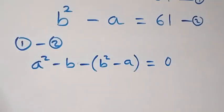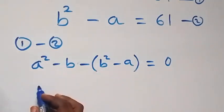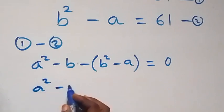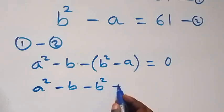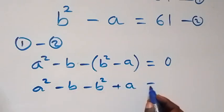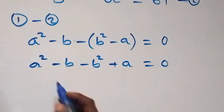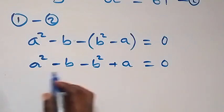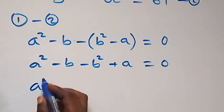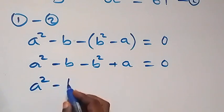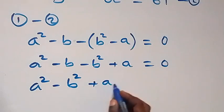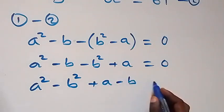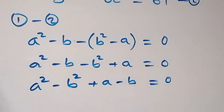Then, expanding the bracket gives us A squared minus B, then minus B squared plus A, equals to 0. Let's group the squares together, so we have A squared minus B squared, then plus A minus B, equals to 0 when we rearrange.